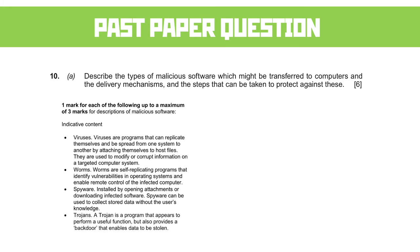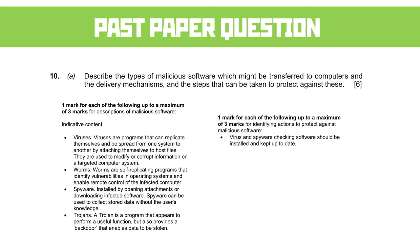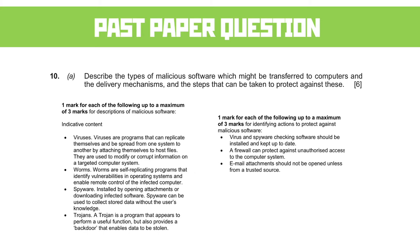A Trojan — think of it like the Trojan horse from the classic story — is a program that looks useful, but when you install and run it, it provides a backdoor that enables data to be stolen or acts as a transmission vector for other types of malicious software. To protect against these: virus and spyware checking software needs to be kept up to date — that's your antivirus software. A firewall can prevent unauthorised access by stopping random computers connecting to yours unless they know the exact port number. Email attachments should not be opened unless from a trusted source.